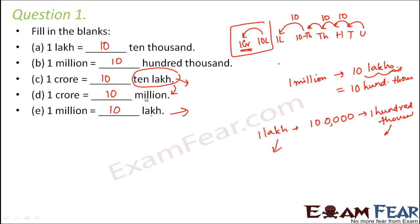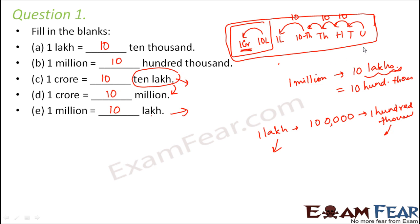So please understand these concepts. The only thing you need to remember is the positioning, and every time you are moving from right to left for every one jump, you just keep multiplying by 10. When it comes to million, just remember that 1 million is equal to 10 lakhs — everything else you can derive from this.